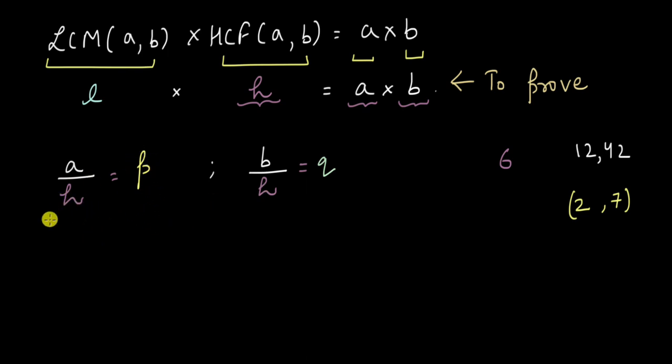Because H is the highest common factor and not just any other common factor, P and Q here will be co-primes. In other words they will have no common factor other than 1. And we can see it from this example also. Here 2 and 7 are co-primes. There are no common factors between 2 and 7.